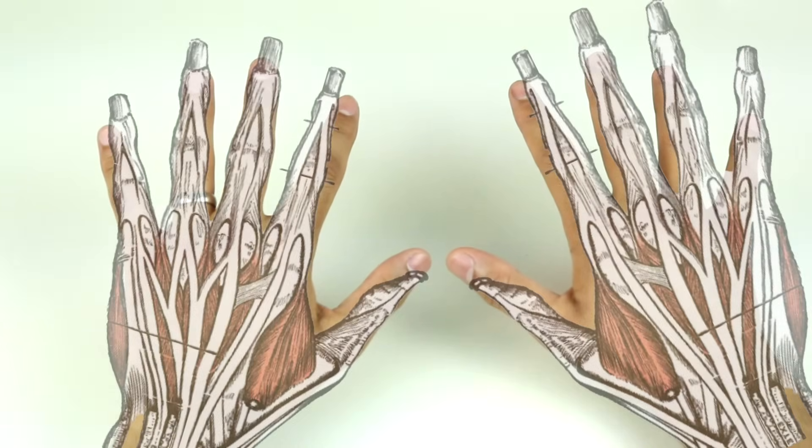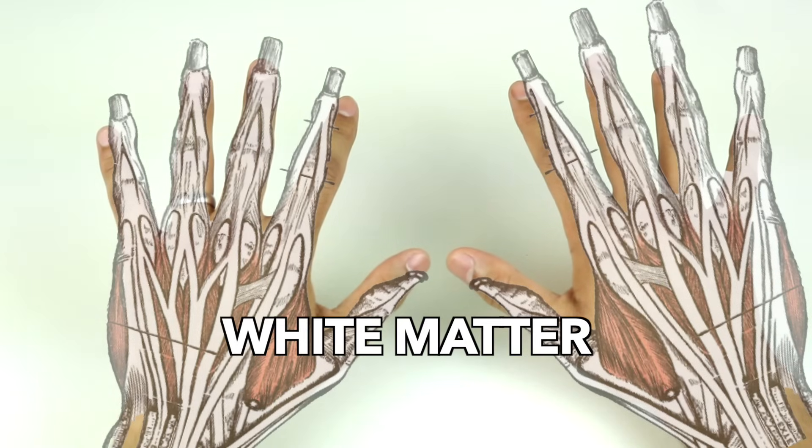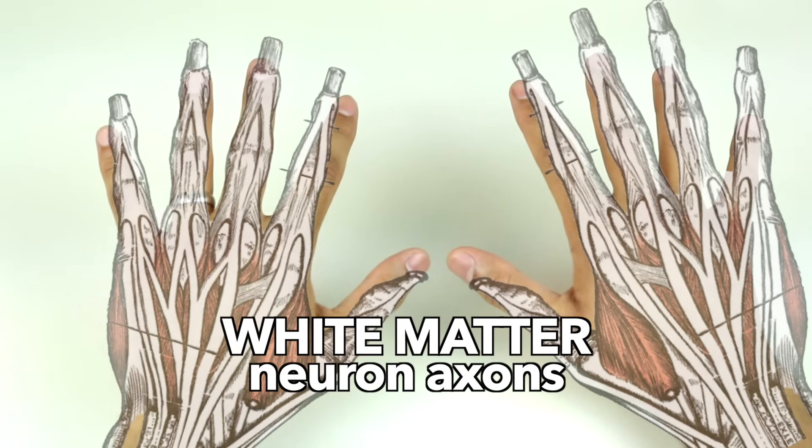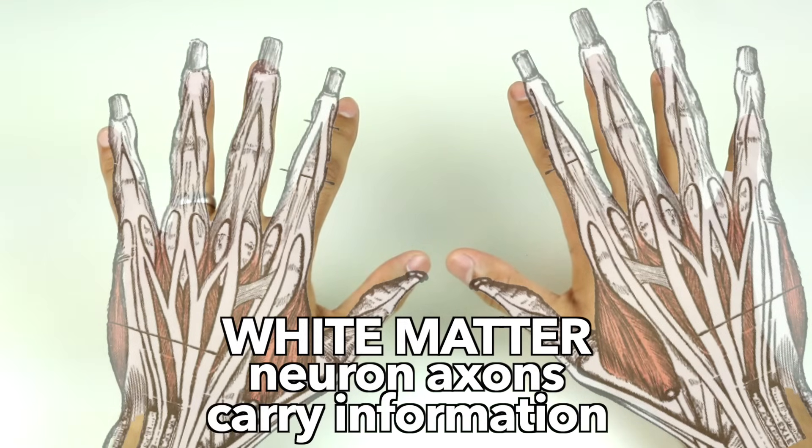The muscles inside your hands represent the white matter of your brain. White matter is made up of neuron axons. Axons carry information from one neuron to another. But it's important to remember that two neurons never really touch.